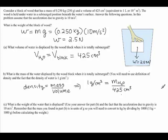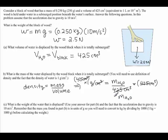Solving for the mass of the water, we multiply both sides of the equation by 425 centimeters cubed. The 425 cancels, the centimeters cubed cancels, and we find that the mass of the water displaced is 425 grams.